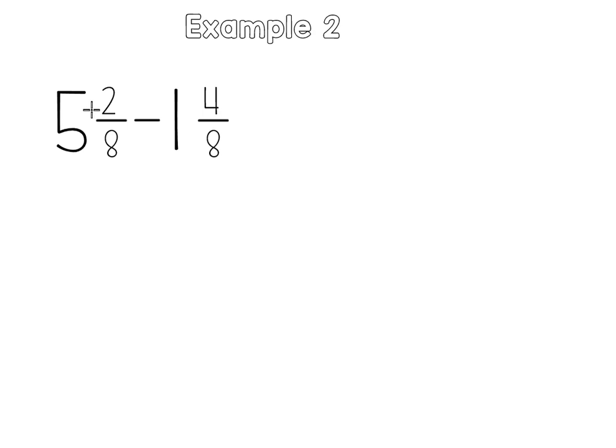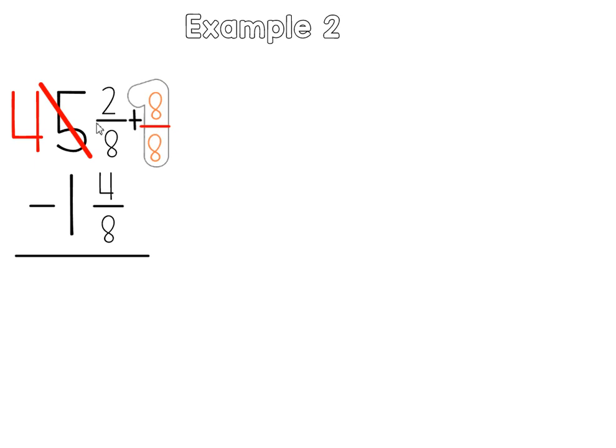Let's look at another example. In this example, we are finding the difference between 5 and 2 eighths and 1 and 4 eighths. So again, to start, we start by lining them up vertically. We make sure that all the fractions are lined up and all the whole numbers are lined up. When I look, I see my bottom fraction is bigger than my top fraction. That means I'm going to have to borrow again. So I cross off the 5 and I'm going to borrow 1 from it. So the 5 becomes a 4.